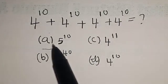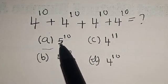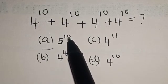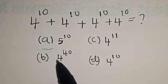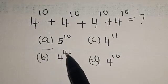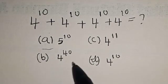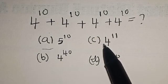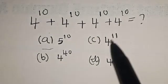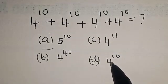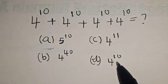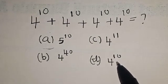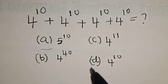We have the following options. A is equal to 5 raised to power 10. B is 4 raised to power 40. C is 4 raised to power 11. And D is 4 raised to power 10.